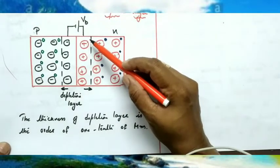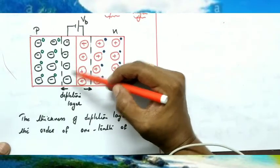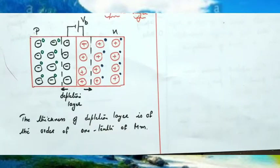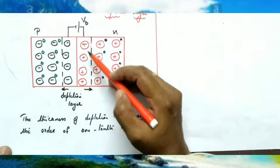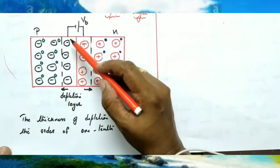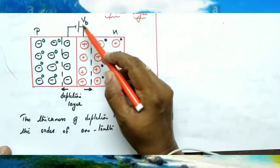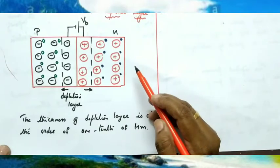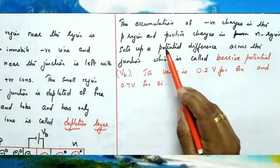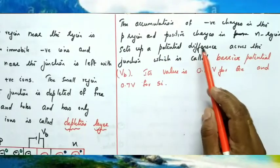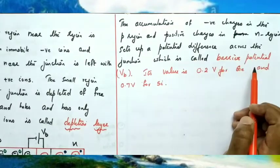Now, in the N region near the junction there is a net positive charge, and in the P region near the junction there is a net negative charge. So, this produces a potential difference at the junction. This potential difference developed at the junction is called the barrier potential.